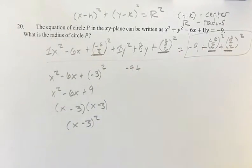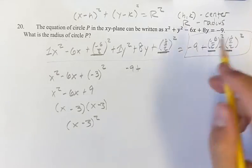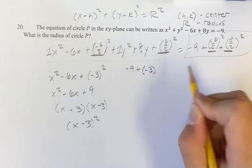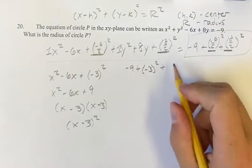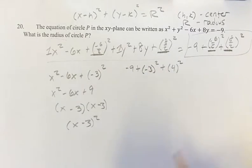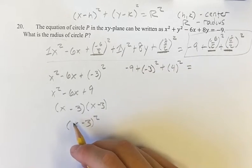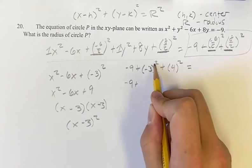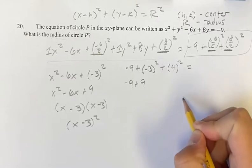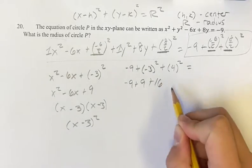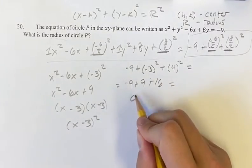So negative 9 plus negative 6 over 2 is negative 3 squared, plus 8 over 2 is 4 squared. Doing this, we have negative 9 plus positive 9. Negative 3 squared is positive 9. Plus 16 is equal to